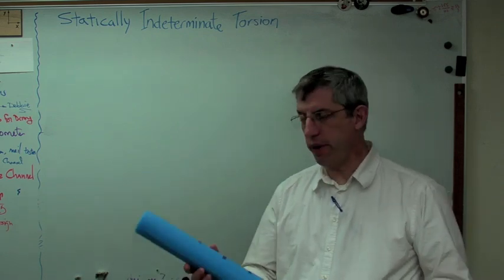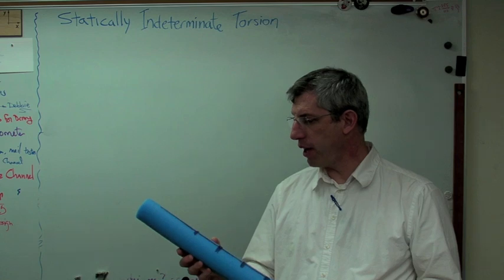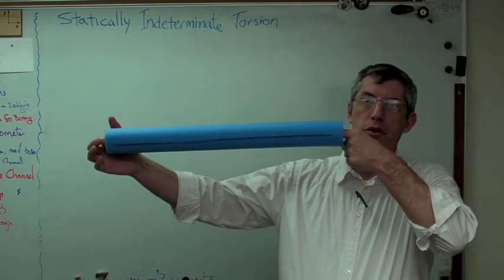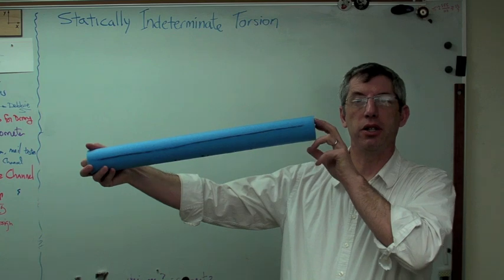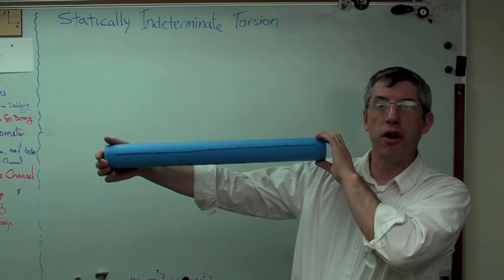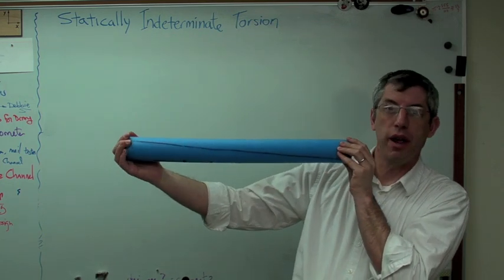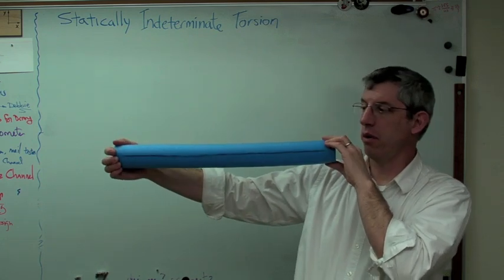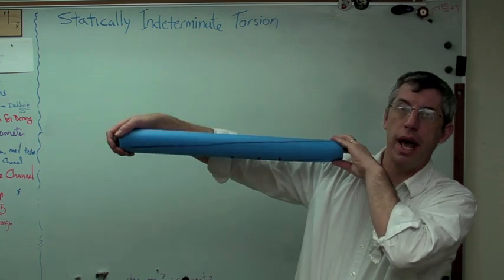Let's talk about torsion real quick. I've got my make-believe drive shaft here. This is actually a swim noodle from a pool, but it's round, and it's going to act like a shaft in torsion. I've got a line drawn down it with marker, and you can see as I twist it, that line distorts. That line is not straight anymore. It's straight, but it's at an angle now.